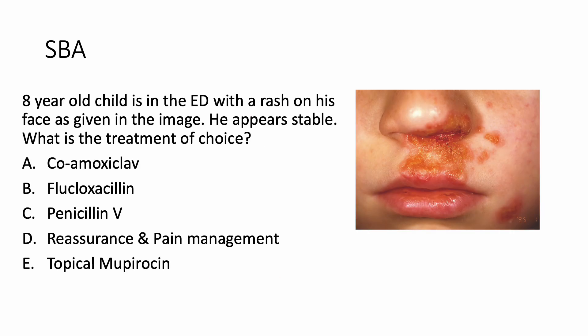So what would be the answer? An 8-year-old child with a rash on his face, appearing stable — what is the treatment of choice? The options are: Co-amoxiclav, Flucloxacillin, Penicillin V, Reassure, Pain Management, or Topical Mupirocin. Co-amoxiclav is quite broad spectrum, so I would not recommend it if the child appears stable. Flucloxacillin is good cover for Staphylococcus aureus, though it has some cover for strep as well. Penicillin V can be a choice for strep, but as the child appears very stable, the right answer here is topical Mupirocin.